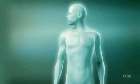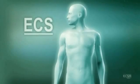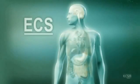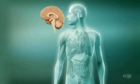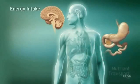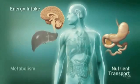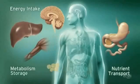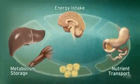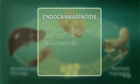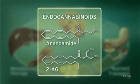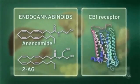The endocannabinoid system, or ECS, influences multiple physiologic processes. This intricate system modulates energy intake, as well as nutrient transport, metabolism and storage. The ECS regulates these processes through endogenous ligands, such as anandamide and 2-arachidonylglycerol, and the CB1 receptor.